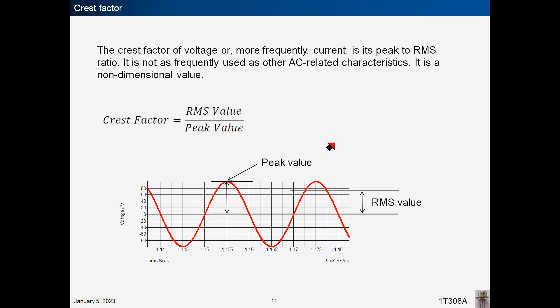The crest factor of voltage or, more frequently, current is its peak to RMS ratio. It is not as frequently used as other AC-related characteristics, and it is also a non-dimensional value.